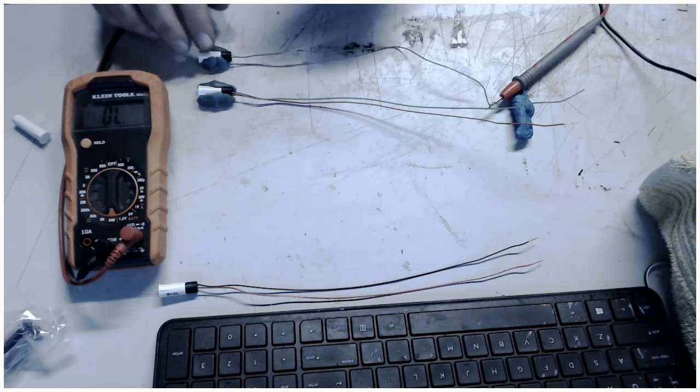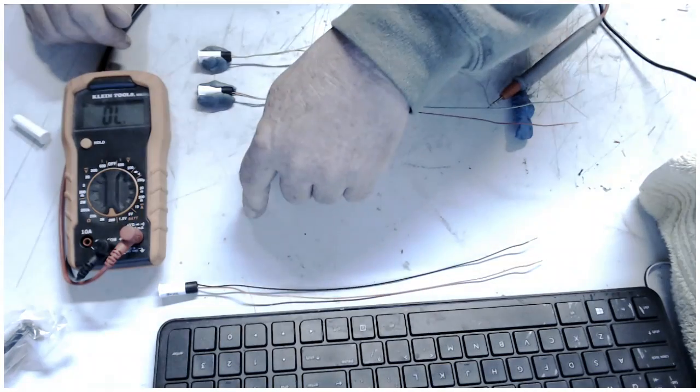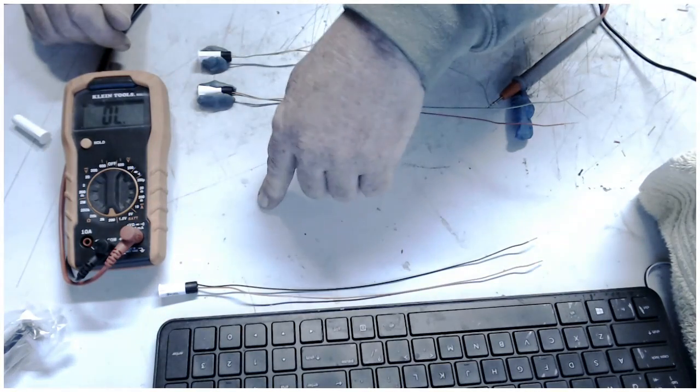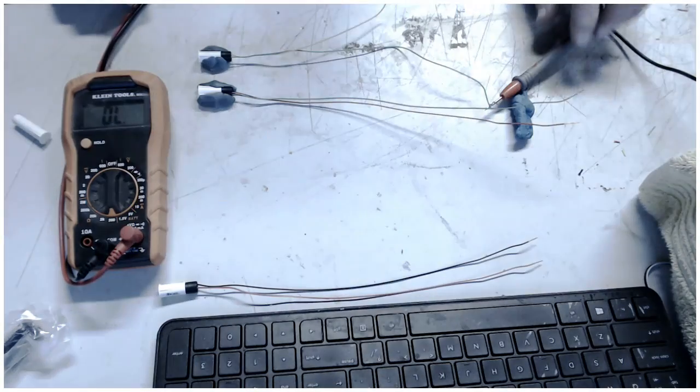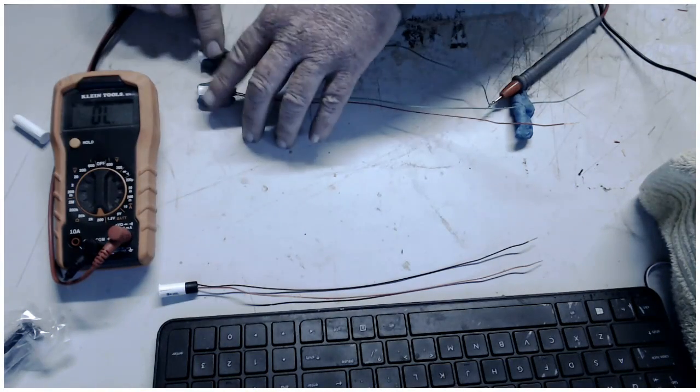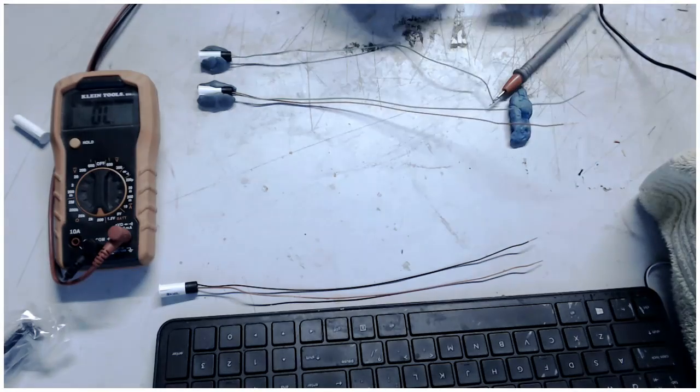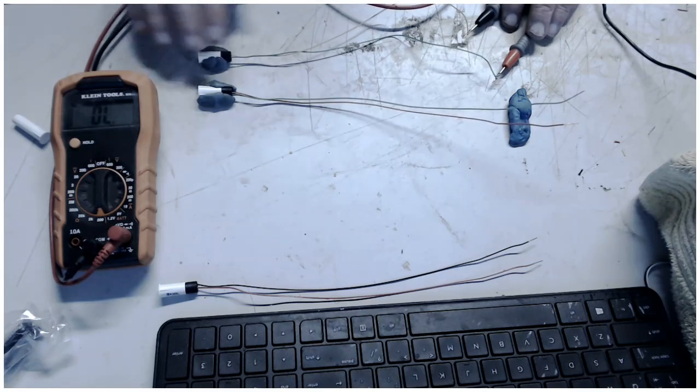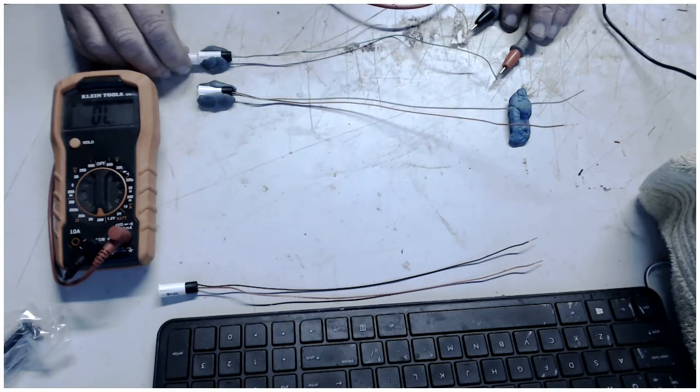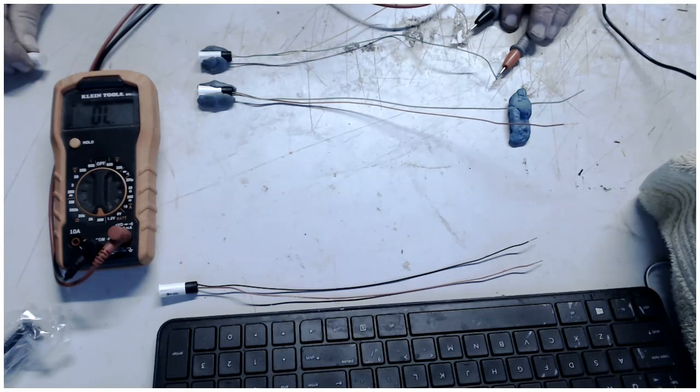So now to put several of these onto one normally closed zone on our alarm panel, you have to put them in series and how you do that is, I've got two contacts here and right now I'm just hooked up to this one. So again, you close it and the meter closes, you open it, it opens up.